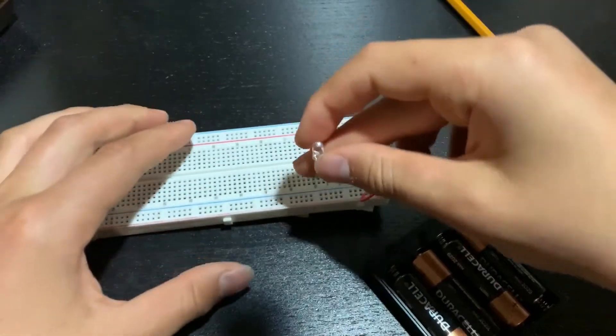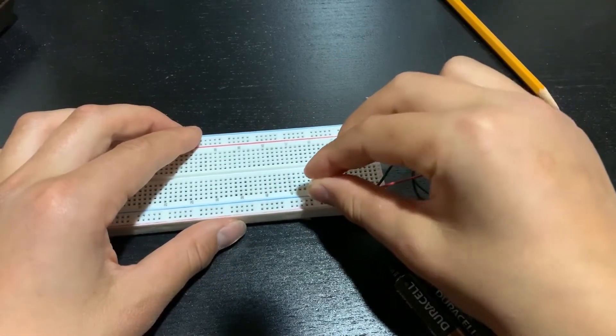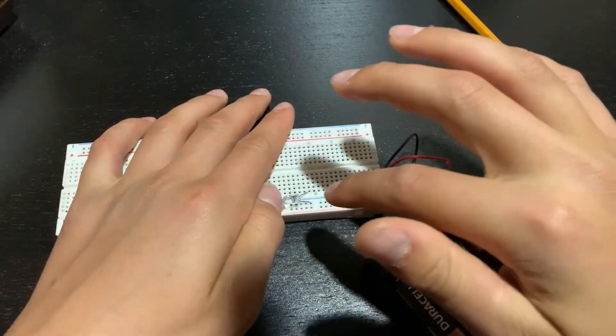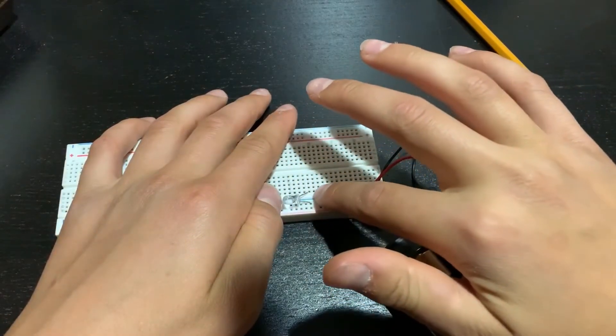Now when we add the LED, the shorter end will go to the negative rail, and the positive end in one of the center holes. Now the negative end of the LED will be connected to the negative end of the power source.